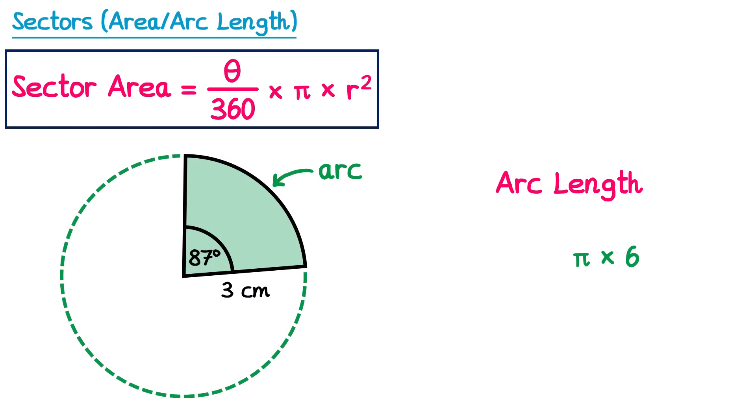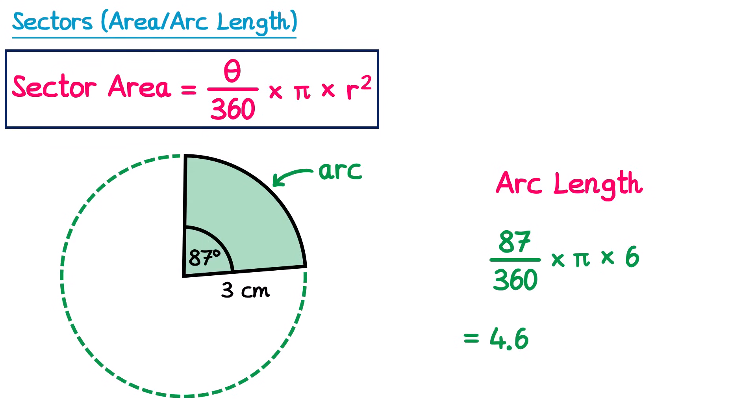The question is how much of the circumference do we want? Well, just like before, a full turn has 360 degrees. Our sector has 87 degrees, so the fraction of the circumference that we want is 87 over 360. So we just multiply this by the formula for the circumference. Typing this into your calculator gives 4.6 centimetres — it's not area, it's the length of the arc, so we measure it in centimetres rather than centimetres squared.